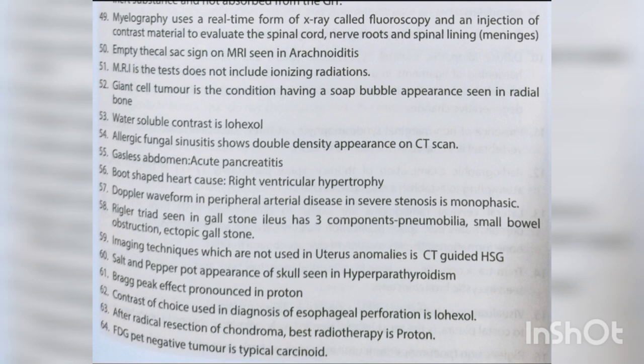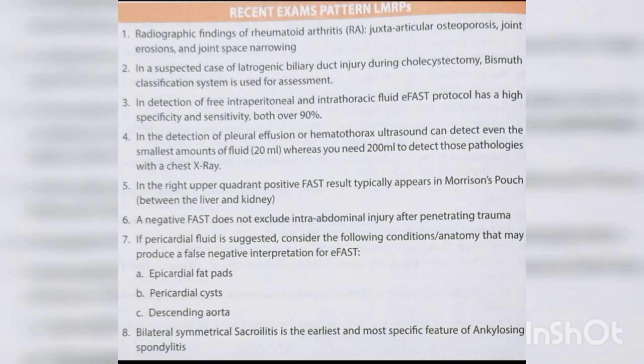Salt and pepper pot appearance of skull is seen in hyperparathyroidism. Bragg peak effect is pronounced in proton therapy. Contrast of choice for diagnosis of esophageal perforation is iohexol. After radical resection of chondroma, best radiotherapy is proton. FDG PET-negative tumor — typical carcinoid. Radiographic findings of rheumatoid arthritis — juxta-articular osteoporosis, joint erosions, and joint space narrowing. In suspected iatrogenic biliary duct injury during cholecystectomy, the Bismuth classification system is used. EFAST protocol has high specificity and sensitivity, both over 90%.